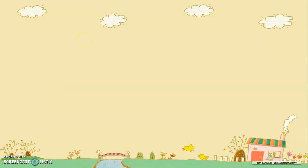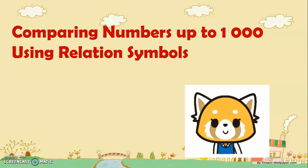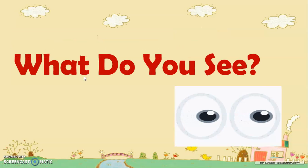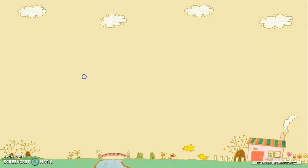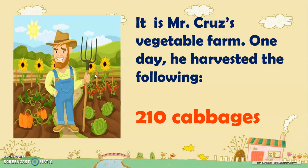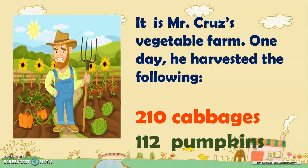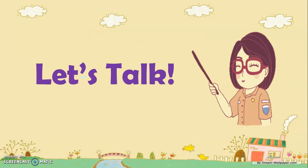Good day, Grade 2! Today we're going to have a lesson that you'll surely have fun with. The title of our lesson is comparing numbers up to one thousand using relation symbols. To start, everyone — what do you see in the picture? Very good, a farm! It is Mr. Cruz's vegetable farm. One day he harvested 210 cabbages and 112 pumpkins. Now, which vegetable did he harvest more? That's what we're going to talk about.